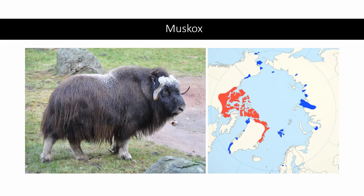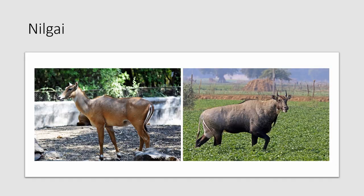The muskox is also a very distinctive species, with its horns extending out to either side and long fur. It's found only in the high arctic of Nunavut, Greenland, parts of the Northwest Territories, Alaska, and also in Siberia and Svalbard. The nilgai is another introduced species from India, introduced to southern Texas. It's fairly distinctive, with a small head for its body and white bands on its ankles. The male is dark gray, whereas the female is yellow-gray.